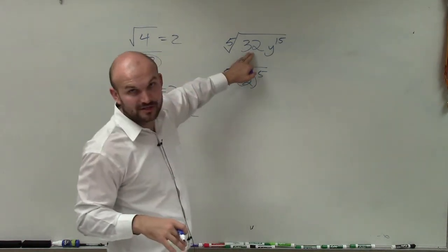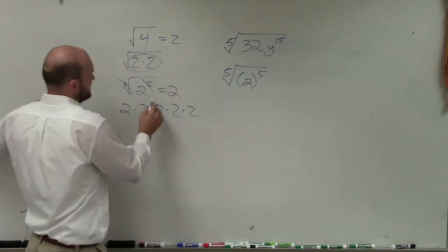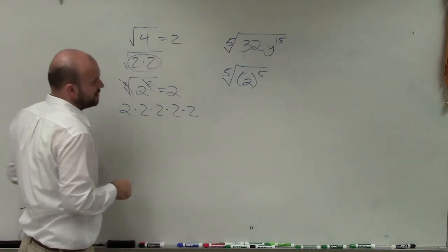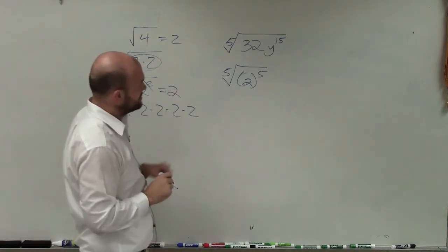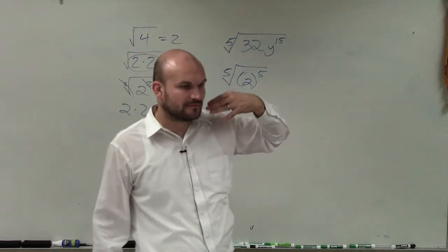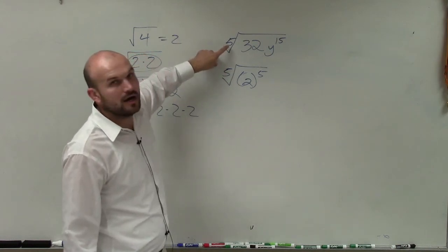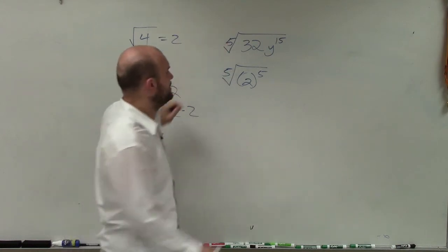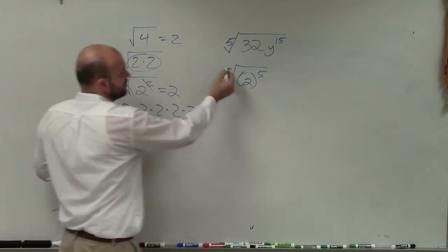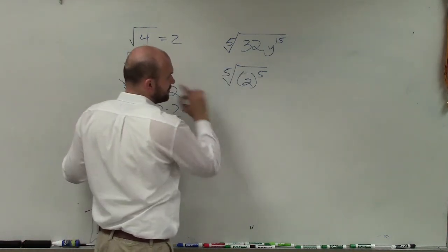Knowing that the fifth root of 32 equals two is a very common one you'll want to memorize. We could also prime factorize 32 — if you keep breaking it down, you'll see it is just two times two times two times two times two. And just like the square root of two squared gives us two, the fifth root of two to the fifth power just leaves us with two.